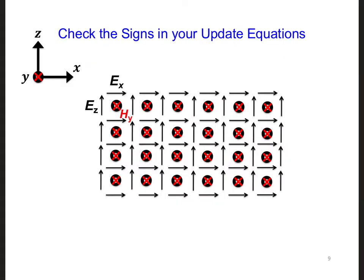Now, if you don't see a nice circular pattern as you implement the updating equations for each component, keep in mind that one way to check the signs in the update equation that you have is by using the right-hand rule.